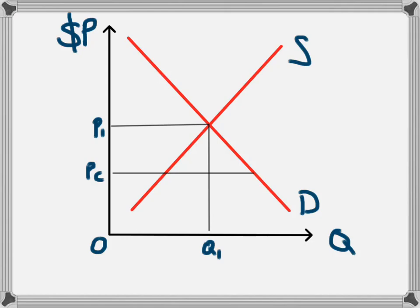If a price ceiling is put into place, because the price is so low, consumers of that product will want more of it, and so at that price they will demand Q2. Because that price is so low, however, the producers or suppliers of that product won't want to supply as much, and so they will only supply this level here of Q3.